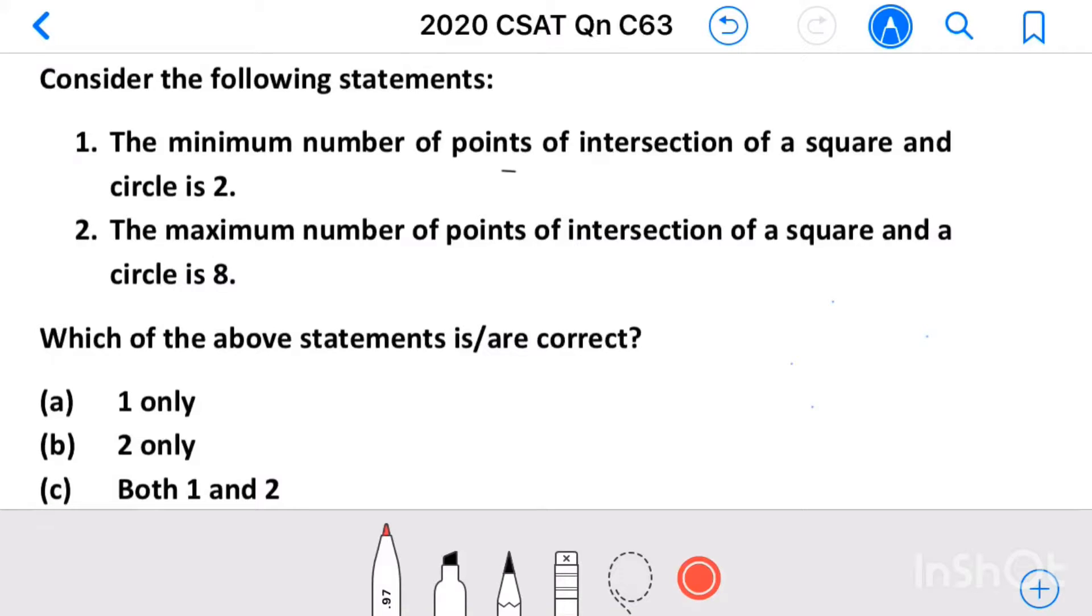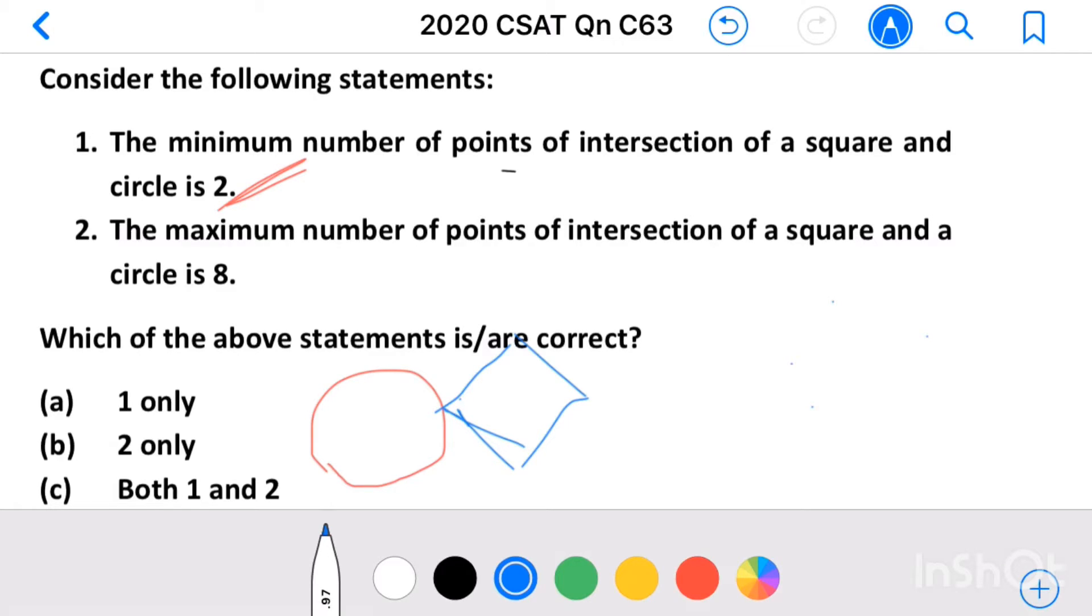Which of the above statements is or are correct? Now let us see the first statement. Minimum number of points of intersection of a square and circle is 2. So a circle and a square, even one point is also possible.